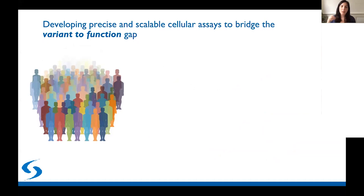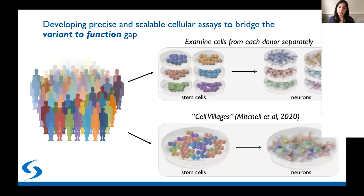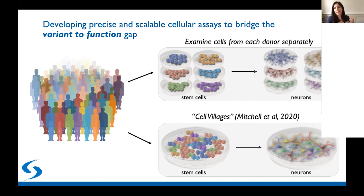When we plan experiments to study different cells from many different people, there are two main approaches. The first is to examine cells from each donor separately in what we call an arrayed format—the most traditional and common approach. More recently, because of work from Steve McCarroll and Kevin Eggen's lab, we are also able to study mixtures of cells in one dish in what we call the cell village approach. This approach decreases cost and variance, enabling us to scale up the number of individuals analyzed at the same time. There are instances where the arrayed format is better, such as studying non-cell autonomous effects, but in others the cell village approach is very useful.